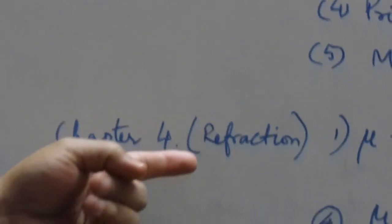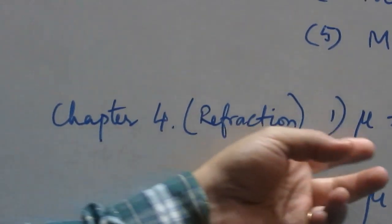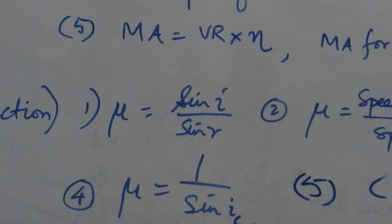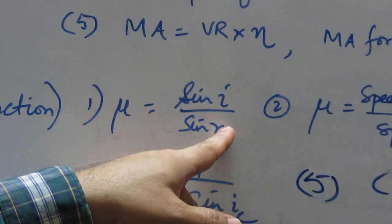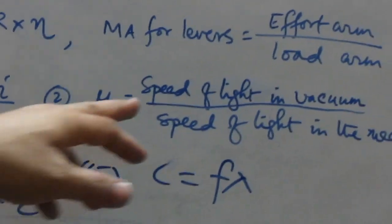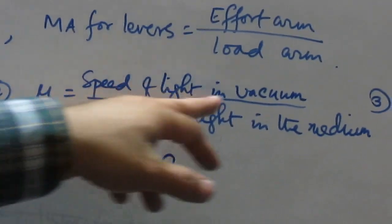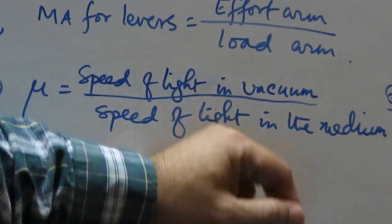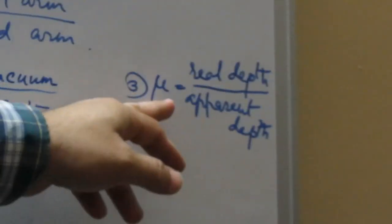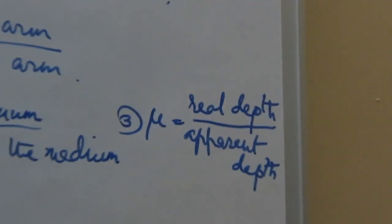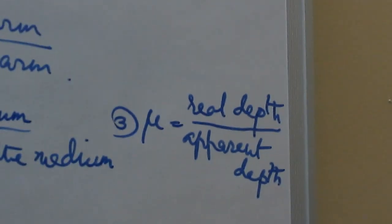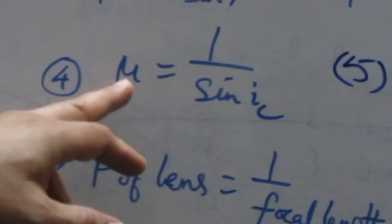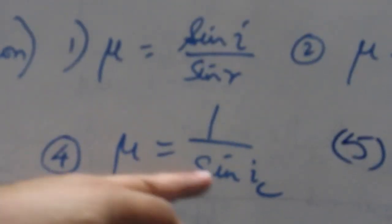Chapter 4, refraction chapter. Mu is equal to sin i by sin r, angle of incidence by sin r, refraction. Mu is in terms of light, speed of light. Speed of light in vacuum by speed of light in medium. This can be numerical. And the formula is real depth by apparent depth. Actual depth by which we can see liquid through the critical angle or refractive index of that medium.